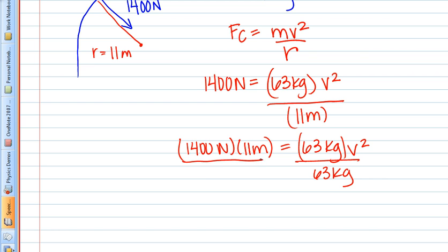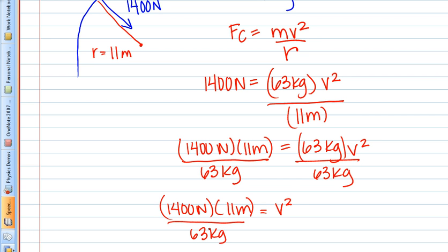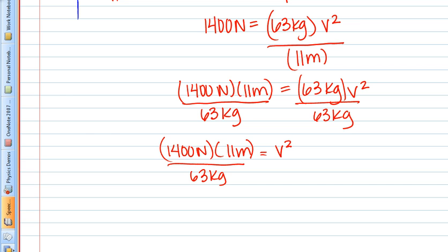So I would be left with V squared equaling 1,400 newtons times 11 meters divided by 63 kilograms. Now, if you were just to plug in 1,400 newtons times 11 meters and divide by 63, you would not end up with the right answer. We have to make sure we remember that this is V squared and take the square root of what we get.